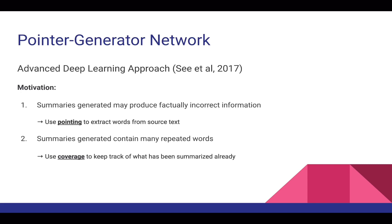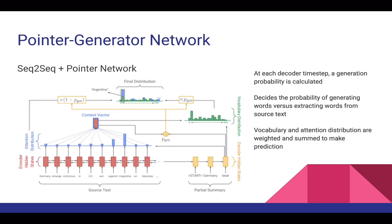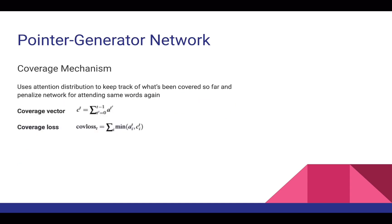The sequence-to-sequence baseline suffers from two issues. The generated summaries may produce factually incorrect information and can contain many repeated words. We approach these problems respectively with pointing and coverage. The pointer generator networks allow us both copying words via pointing and generating words from a vocabulary. At each decoder time step, the generation probability is calculated, which determines whether to generate words from the vocabulary or copy words from the source. The vocabulary and attention distributions are weighted and summed at the end to form the prediction. We build on top of our pointer generator model with coverage, which sums attention distributions over all previous decoders and introduces an extra loss term. This penalizes the network for attending to the same words again.